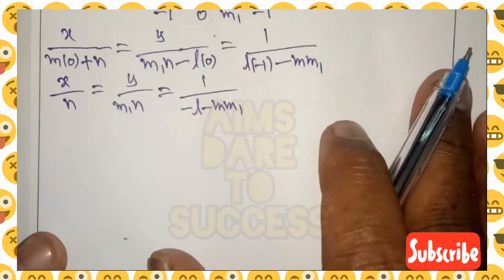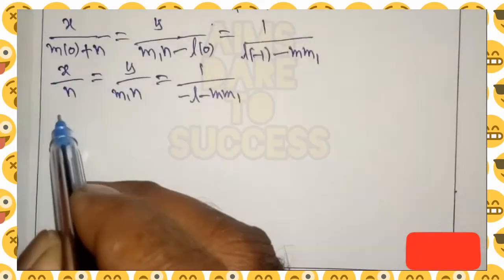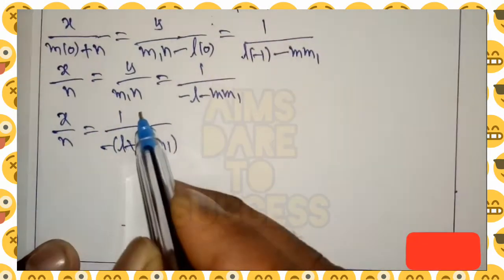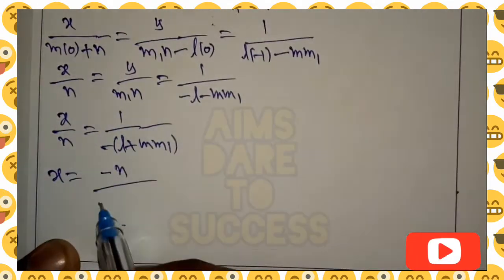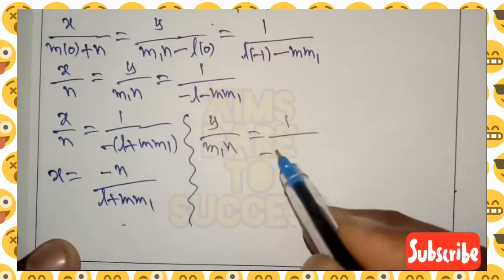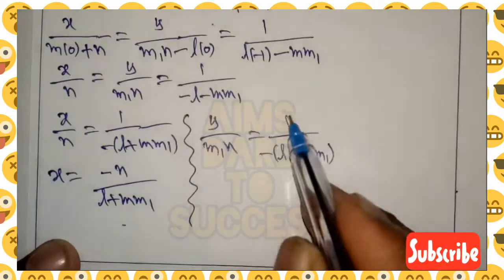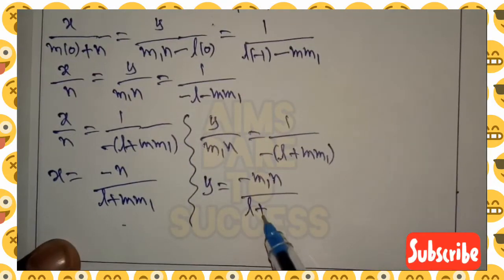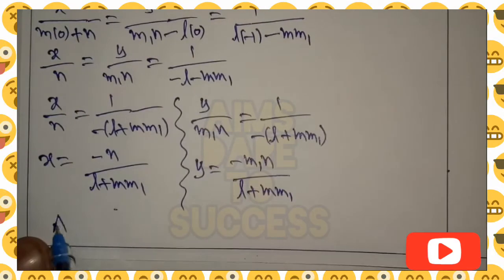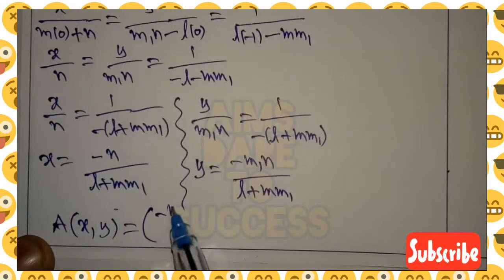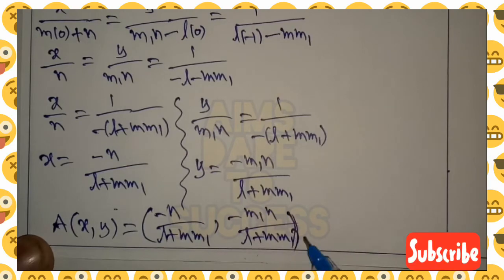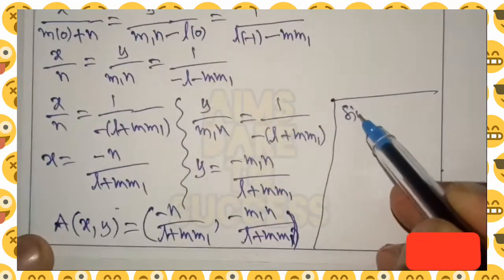Equating x and 1 to get the x value: x/n = 1/(−(l + m·m1)), so x = −n/(l + m·m1). Similarly, y/(m1·n) = 1/(−(l + m·m1)), so y = −m1·n/(l + m·m1). Therefore point A is (−n/(l + m·m1), −m1·n/(l + m·m1)).